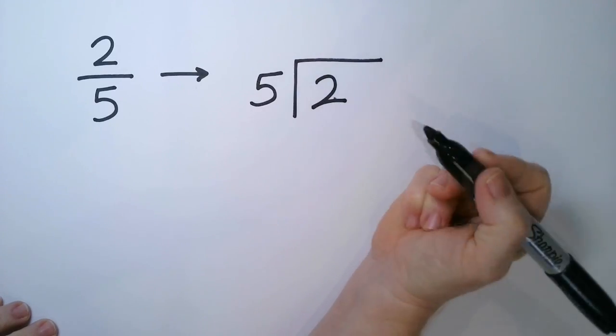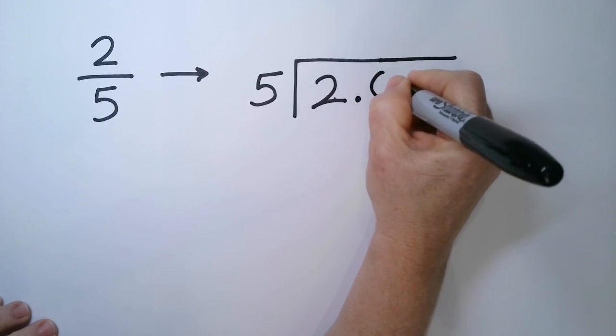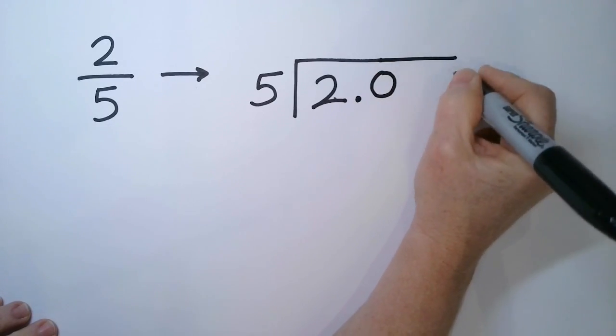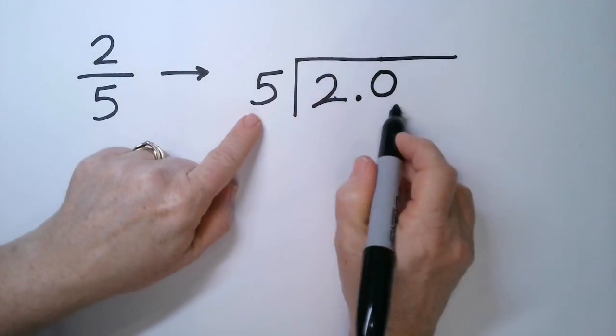5 goes into 2, well it actually doesn't, so what I'm going to have to do is put a decimal point here and add a zero. Now I can add as many zeros as I want and it won't change the problem. So 5 doesn't go into 2, but 5 goes into 20.